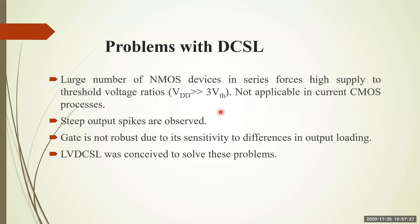In this concept of alternative gates, we have studied: CMOS logic structure, pseudo-NMOS logic structure, NMOS logic structure, dynamic logic structure, domino logic structure, DCSL logic structure, and pass transistors — nearly eight different kinds of alternate logic structures and logic circuits in this particular concept. Thank you for this session.